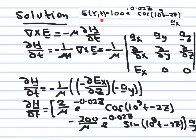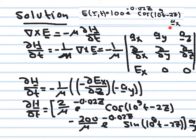I wrote the expression for the electric field as a reminder. We use the curl equation — curl E equals minus partial B partial t — differentiating the electric field relative to space, then integrating to get the magnetic field. Taking μ out as a constant and solving for partial H partial t: the electric field has only an x-component, which is a function of z.